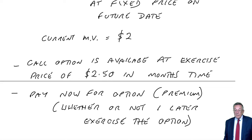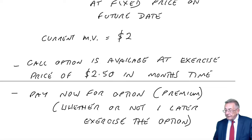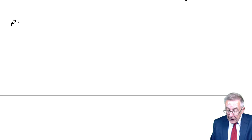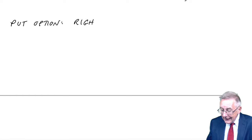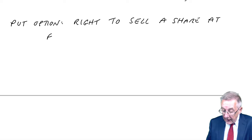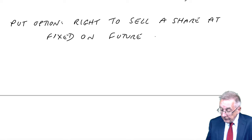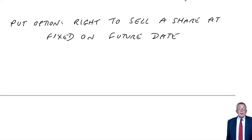So that's what a call option is — the right to buy a share at a future date for a fixed price. It will be our choice on that future date whether we exercise it or not. Also available are what we call put options, and it's exactly the same idea, but a put option is the right to sell a share at a fixed price on a future date. Let me give you an example of why you might find this useful.